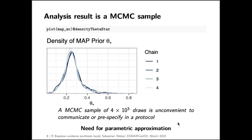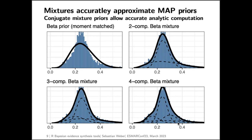The analysis result is at this stage an MCMC sample — here you see the histogram of the four chains run by default — but this is inconvenient to communicate or pre-specify in a protocol. We need a parametric approximation to be able to state exactly what our prior for the new study is. This is what RBesT does well: it provides conjugate mixture priors which can be fit to these MCMC results.